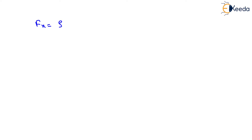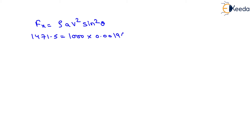To determine the force in the direction of the jet, we use the equation Fx equals rho A v squared sin squared theta. We know Fx equals 1471.5 Newton, rho equals 1000 kg per meter cube for water, cross-sectional area equals 0.001963, and theta equals 30 degrees, so sin squared 30 degrees. After solving, we get velocity equals 54.77 meter per second.